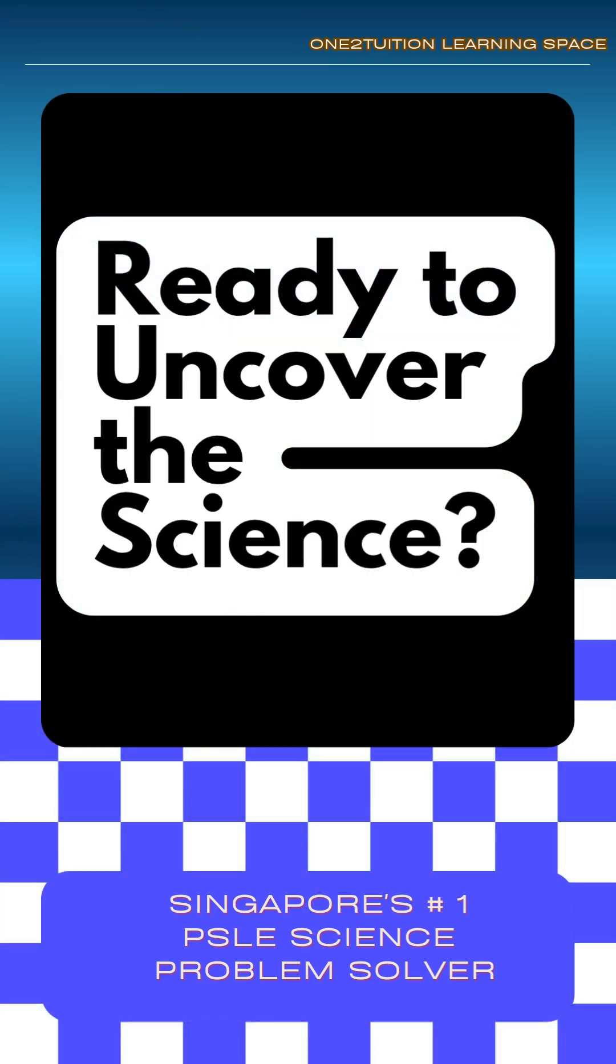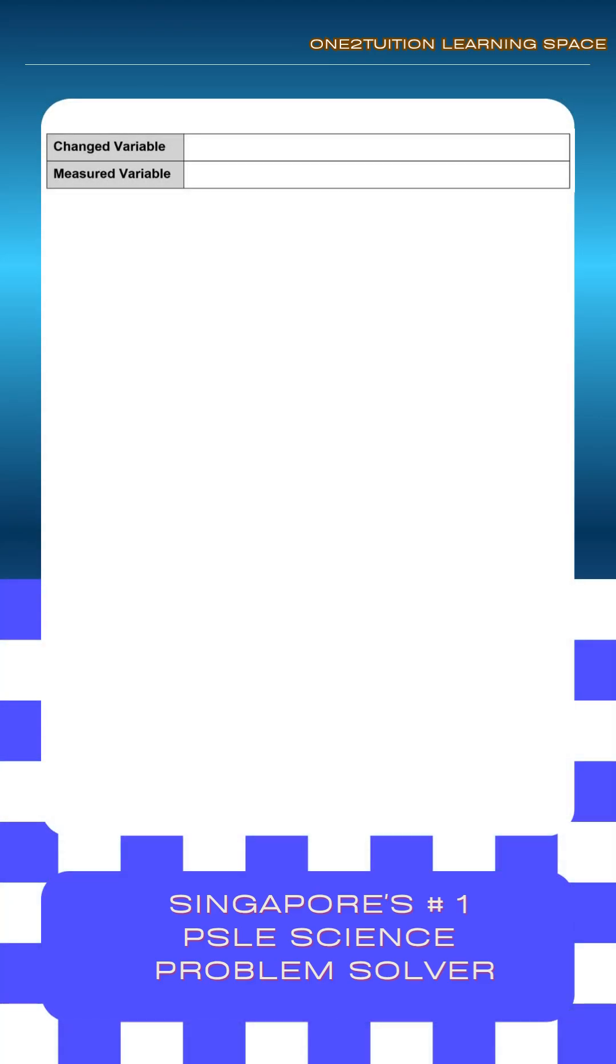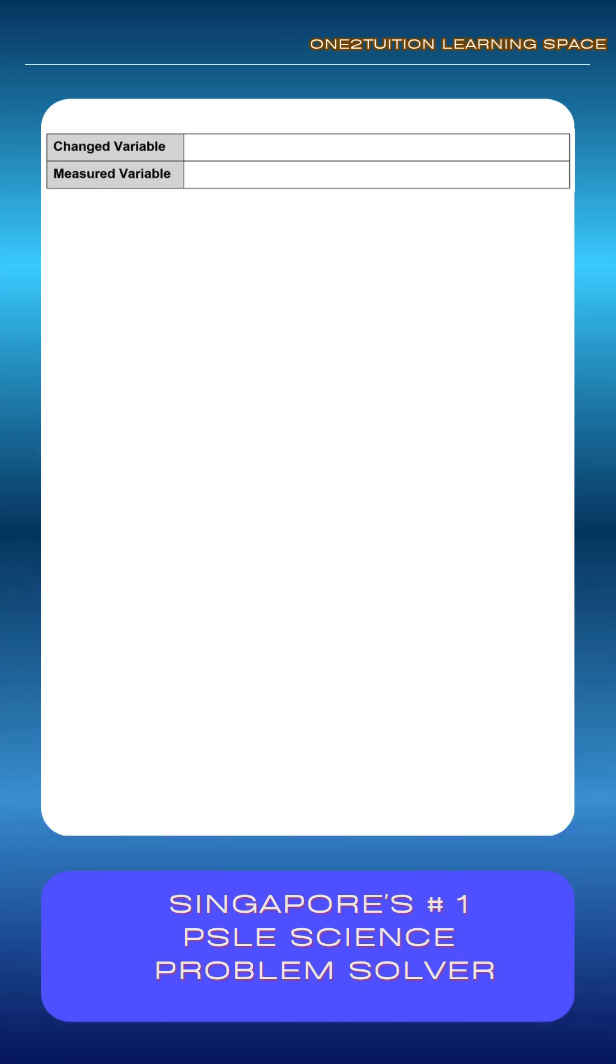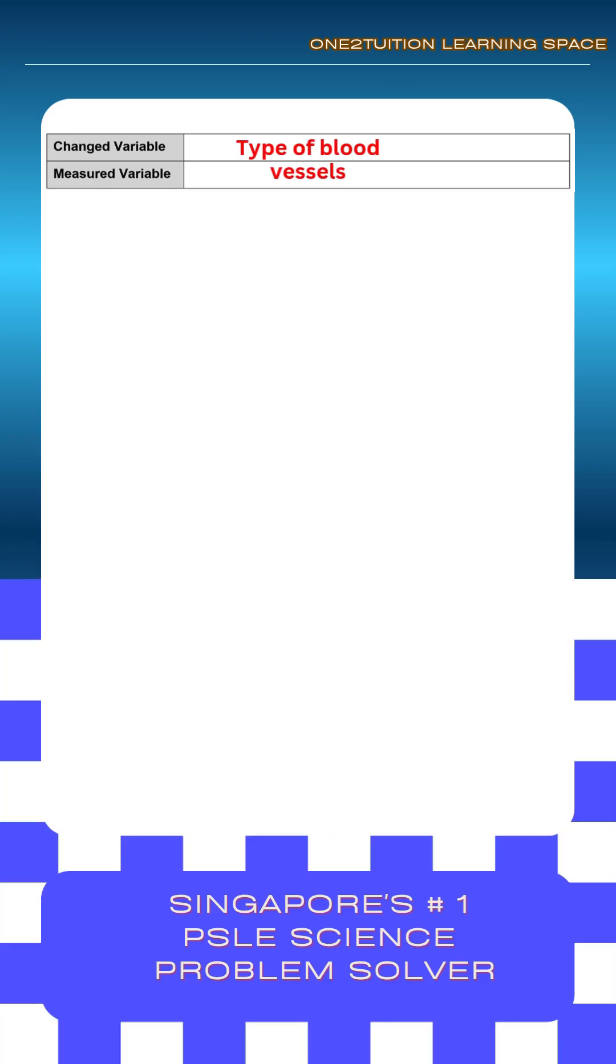Ready to uncover the science? Let's start by identifying the changed and measured variables of the question. Type of blood vessels. Rate of blood flow.